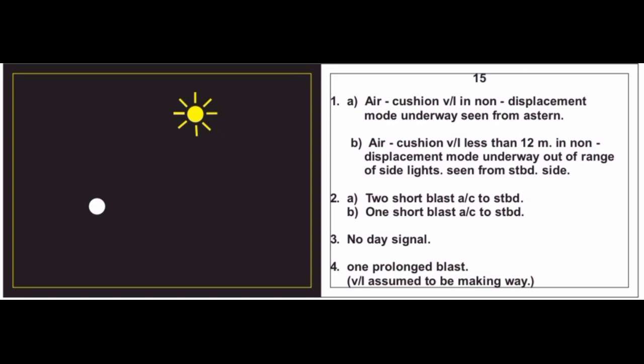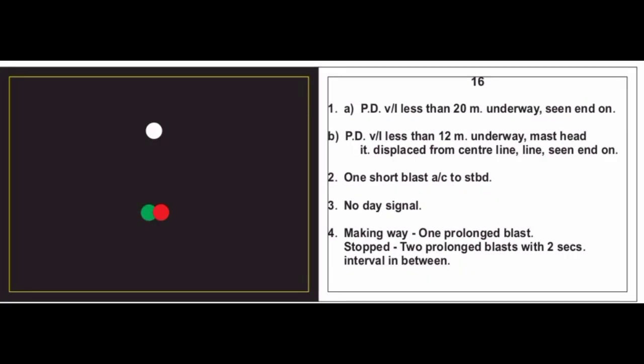Card 15: Air cushion vessel in non-displacement mode, underway, seen from stern. Second condition: air cushion vessel less than 12 meters in non-displacement mode, underway, out of range of sidelights — seen from port side (card says starboard but it should be port). For first condition: two short blasts, alter course to port. For second condition: one short blast, alter course to starboard. No day signal. Sound signal: one prolonged blast; vessel assumed to be making way.